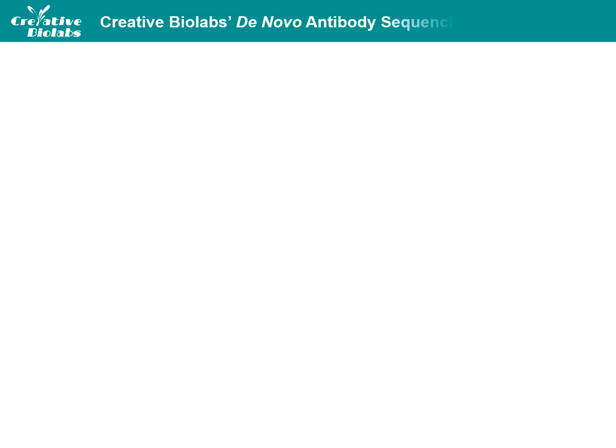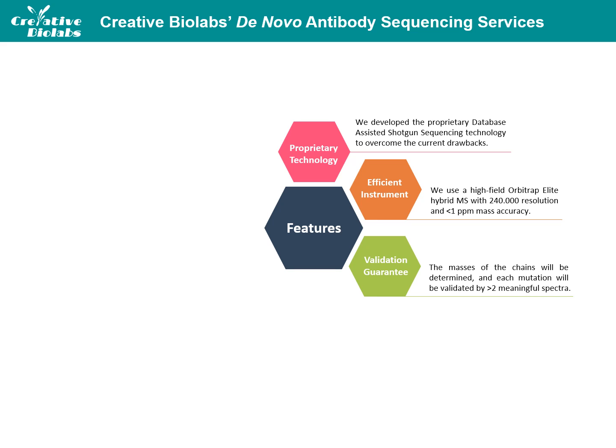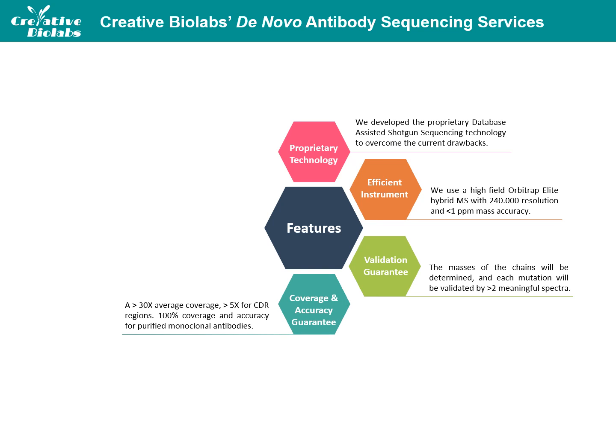CreativeBioLabs provides professional DeNovo antibody sequencing services with the following features. We have developed proprietary database-assisted shotgun sequencing technology to overcome the current drawbacks of sequencing based on traditional methods. We use a high-field Thermo Scientific Orbitrap mass spectrometry instrument with 240,000 resolution and less than 1 ppm mass accuracy to perform the services. The masses of the reduced light and heavy chains will be determined to validate the determined sequences, and each mutation in the antibody will be validated by at least two meaningful spectra. We guarantee greater than 30x average coverage.